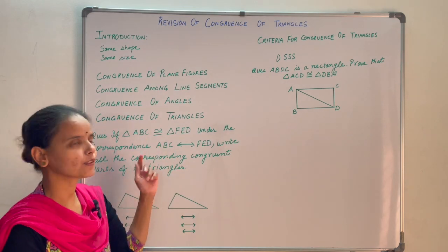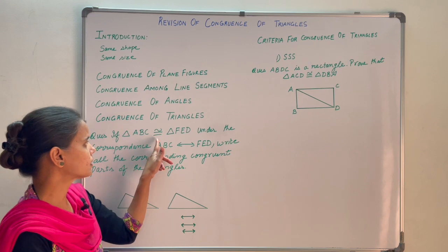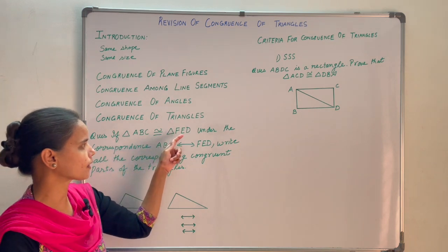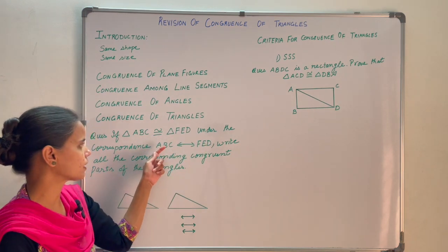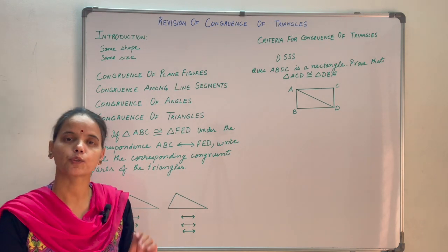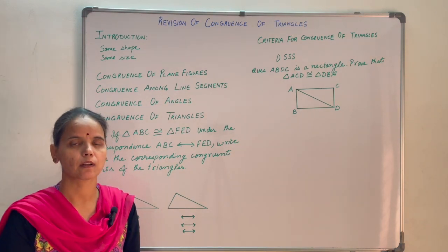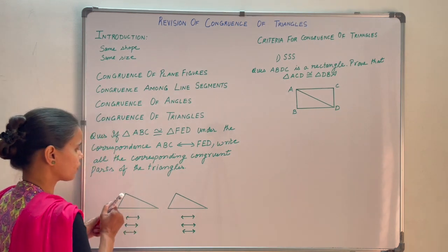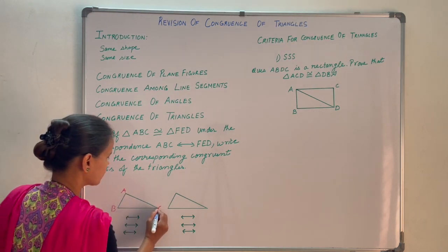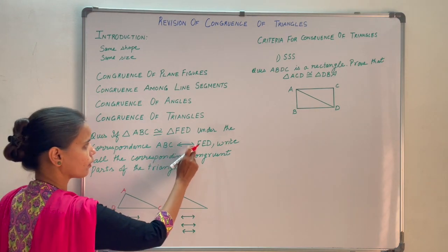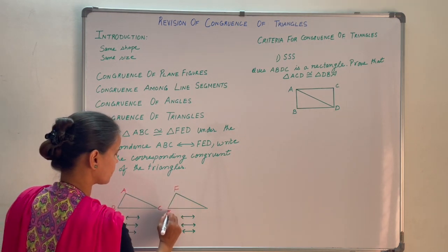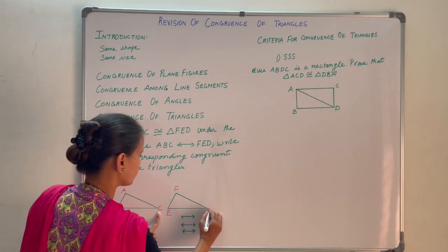To understand the congruence of triangles, let us take this question. This is the congruency symbol. The question says: if triangle ABC is congruent to triangle FED under the correspondence ABC corresponding to FED, write all the corresponding congruent parts of the triangle. A triangle has 6 elements — 3 angles and 3 sides. In triangle ABC corresponding to FED, A corresponds to F, B corresponds to E, and C corresponds to D.